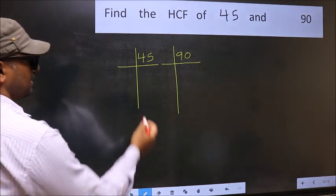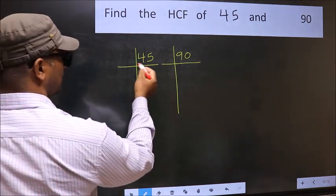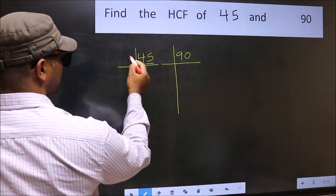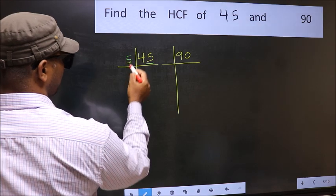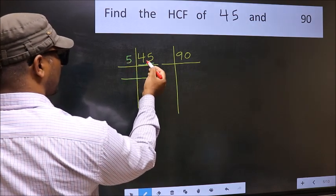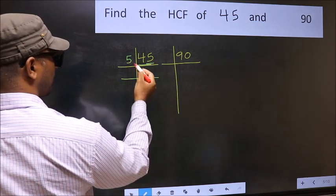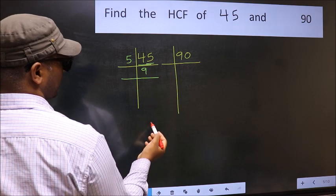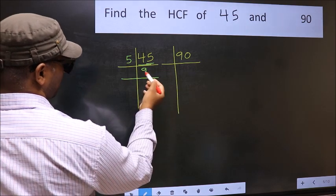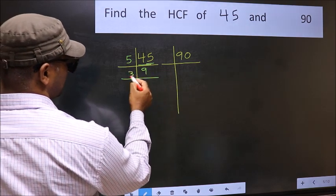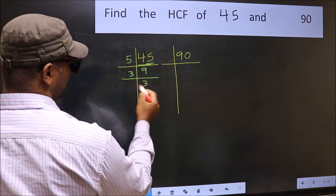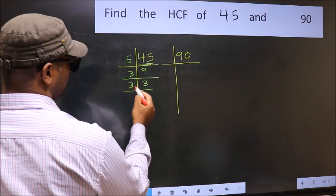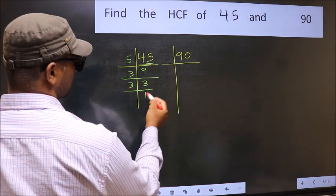For 45, the last digit is 5, so we take 5 as a factor. When do we get 45 in the 5 table? 5 nines are 45. Now 9 is 3 times 3. 3 is a prime number, so 3 times 1 is 3.